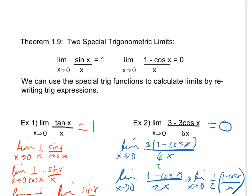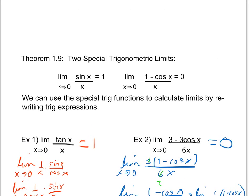Just a quick recap: please make sure you get these formulas down. If you're stuck on trig limits and direct substitution gives you an indeterminate form, see if you can rewrite the expression so it involves sine of x over x or one minus cosine of x over x.